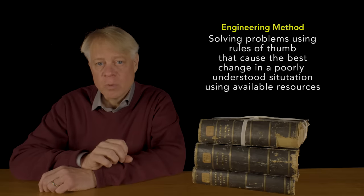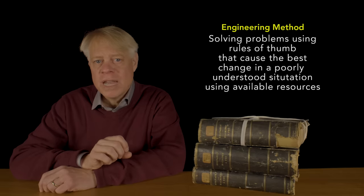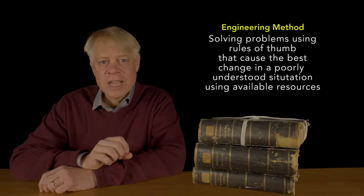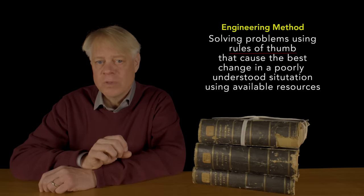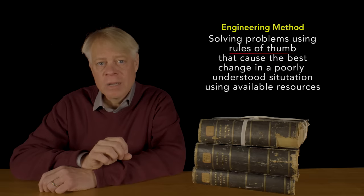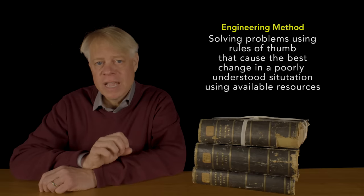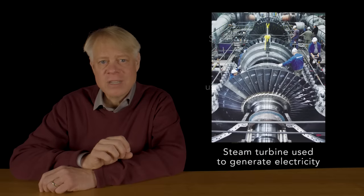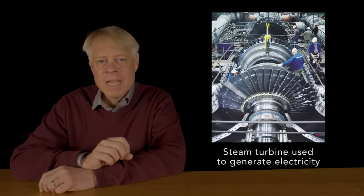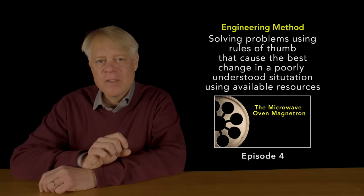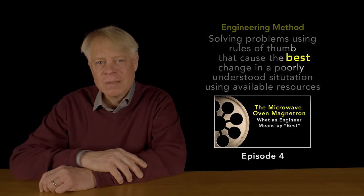If we return to our definition of the engineering method — solving problems using rules of thumb that cause the best change in a poorly understood situation using available resources — we can now see where science enters. Scientific practice and knowledge offers engineers gold-plated rules of thumb: rules that work better than those observed from observation or trial and error. Although the turbine was a 19th-century invention, Parsons' turbine still enables the daily lives of nearly every human on the globe, as its descendants continue to generate the world's electricity with steam power. In the next video, I'll explore what an engineer means by 'best.' I'm Bill Hammack, The Engineer Guy.